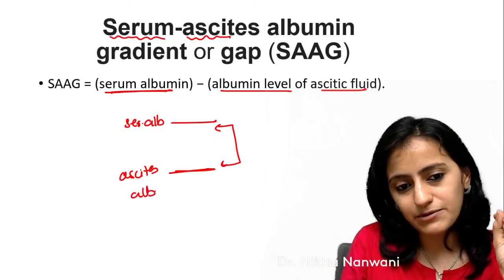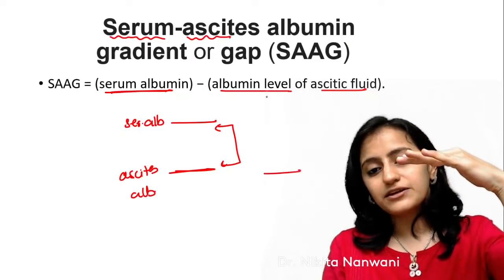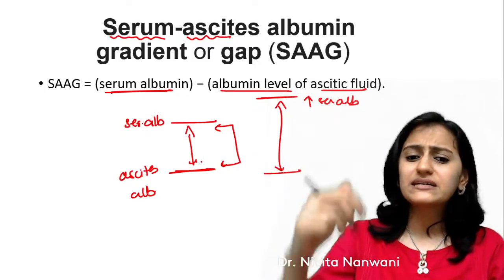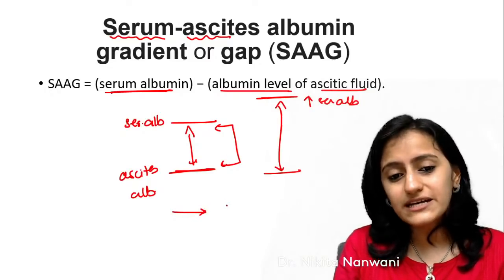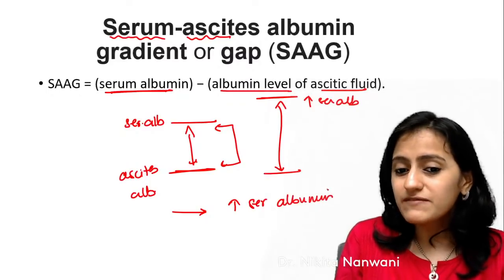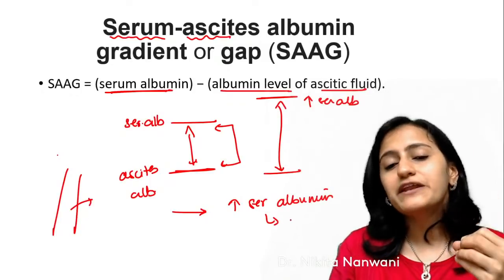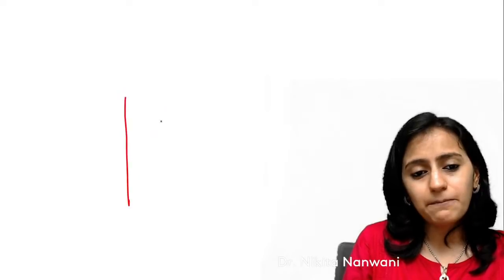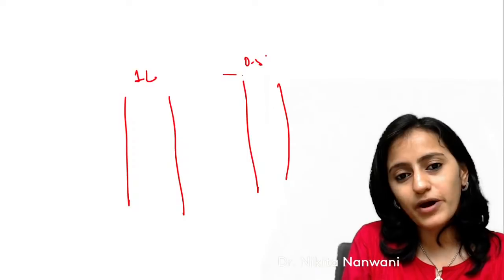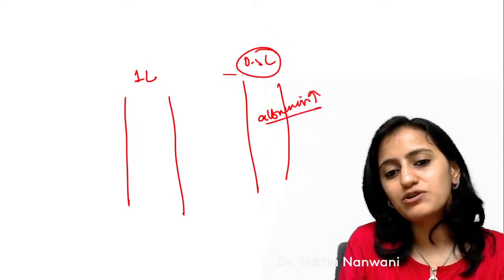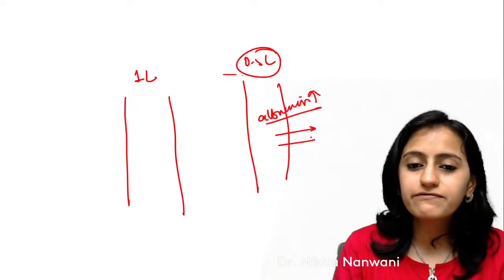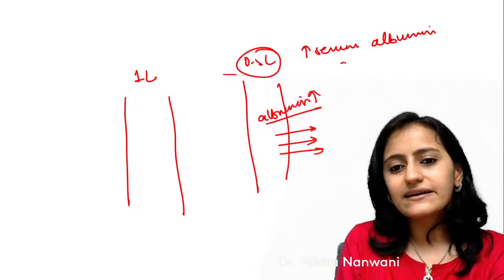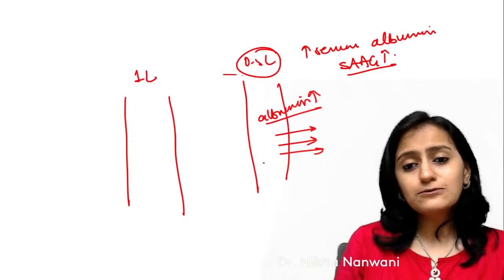When will this gradient be high? When you increase serum albumin levels, the gradient increases. Serum albumin increases with hemoconcentration — when plasma volume is decreasing. If you have a plasma volume of one liter and it decreases to 0.5 liters, the albumin concentration rises. So when fluid is sent out of the blood vessel, the relative concentration of albumin increases, and SAAG increases.